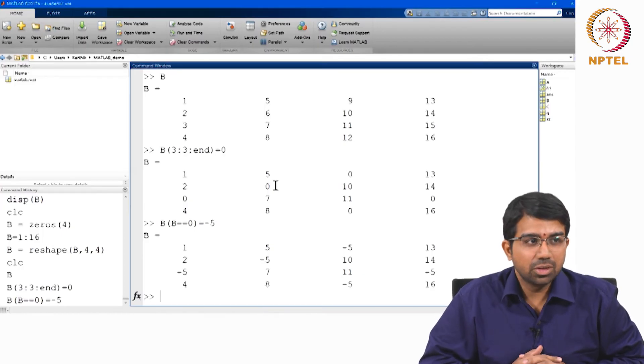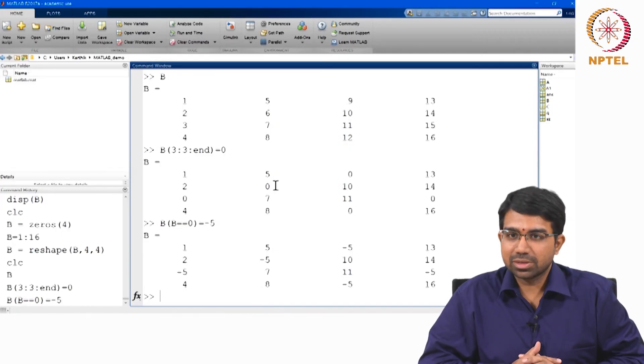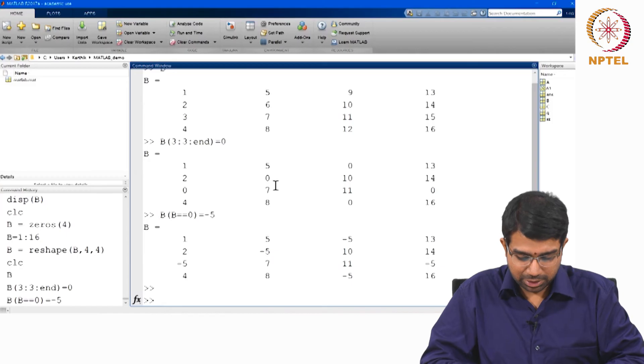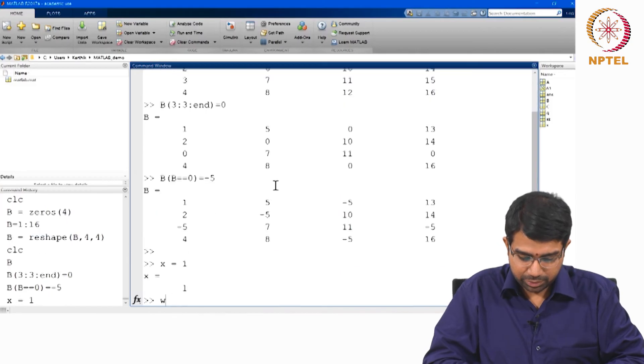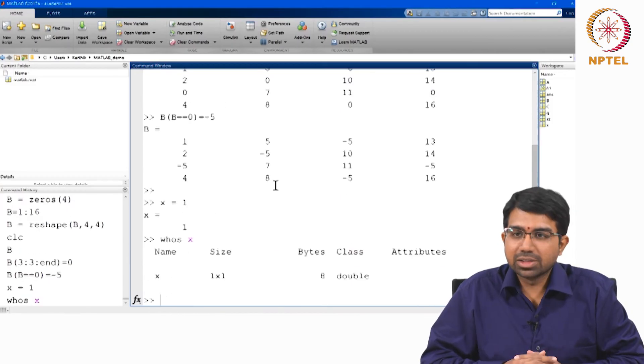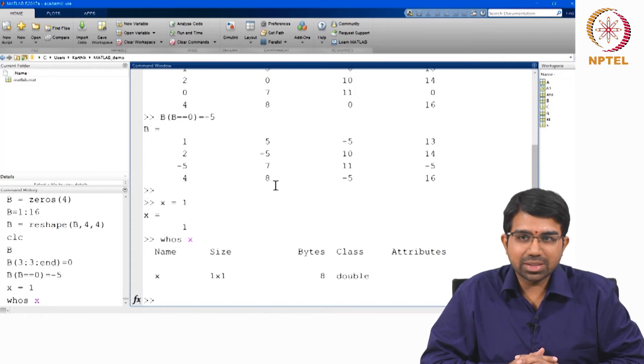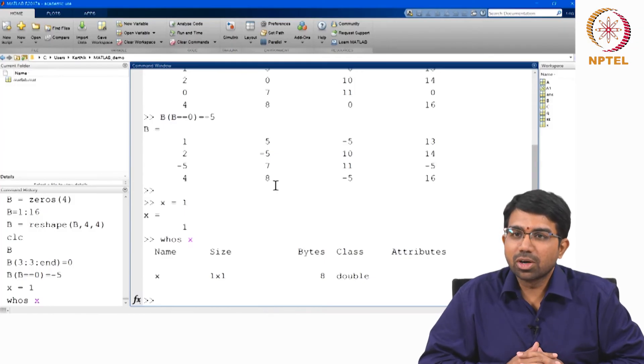And the first rule, 0th rule of MATLAB programming is everything is a matrix. Practically everything that is output in MATLAB is a matrix. So in fact, let us say it is a 1 cross 1 matrix. So everything is a matrix, that is the 0th rule. The first rule, you should not use loops.